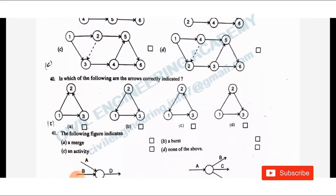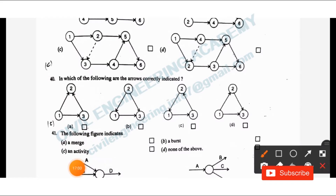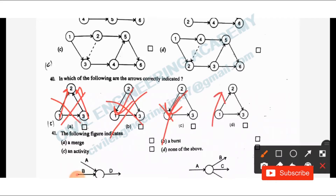Question 40: In which of the following are the arrows correctly indicated? Checking options: if numbering goes 1, 2 but arrow shows 3 then 2 — not right. Option with 2, 1 — not right. Option D has arrows going 1 to 2 to 3 in correct order. Option D is the right answer.